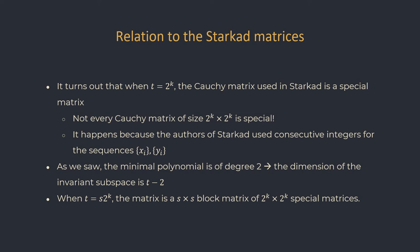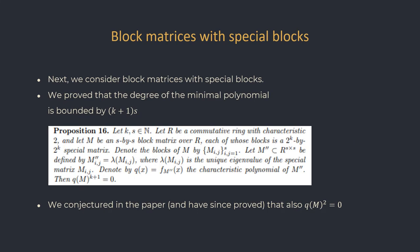In the general case where T equals s times 2^k, the Starkad matrix is a block matrix of s×s blocks, each of which is a special matrix of size 2^k × 2^k. We prove that if we take such a matrix M and replace each block with its unique eigenvalue lambda, we get an s×s matrix whose characteristic polynomial q has degree s. The minimal polynomial of M divides q^(k+1), which is of degree (k+1)s, giving the bound of the second theorem. The conjecture — now proved — is that the minimal polynomial also divides q squared, giving the bound T minus 2s of the third theorem.